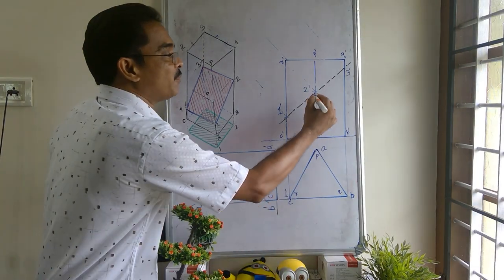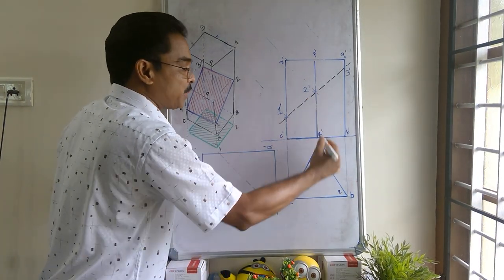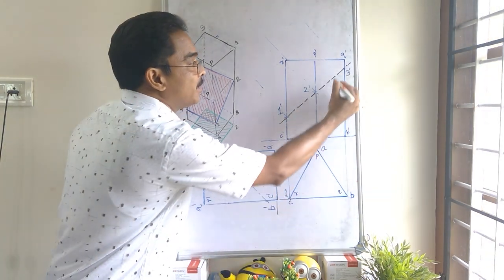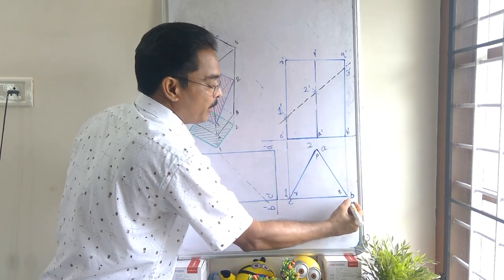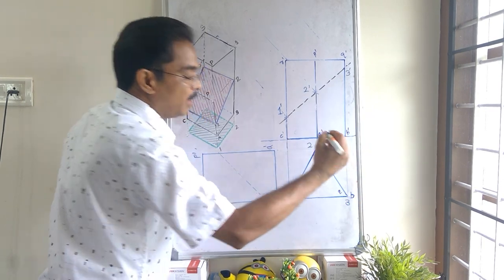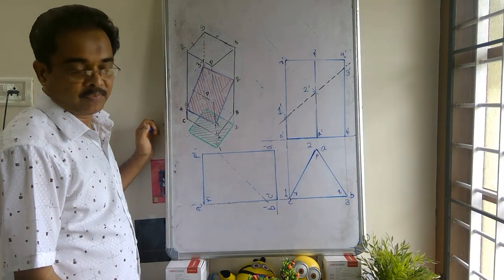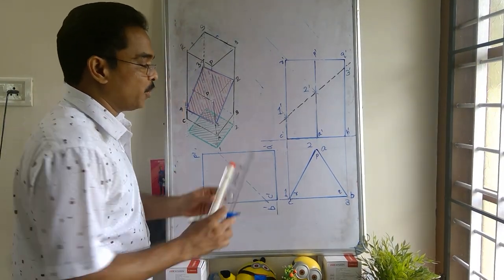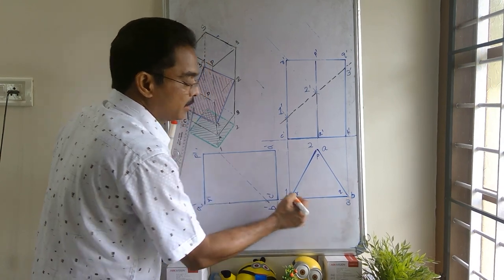Similarly, the top view of the point two dash will be along with A and P. Then, the top view of the point three dash will be along with B and Q. Then, you join the points one, two and three.